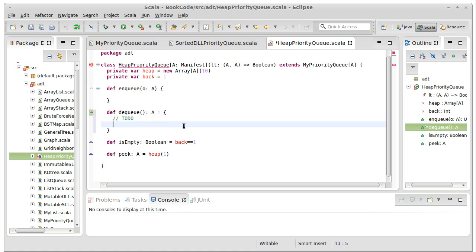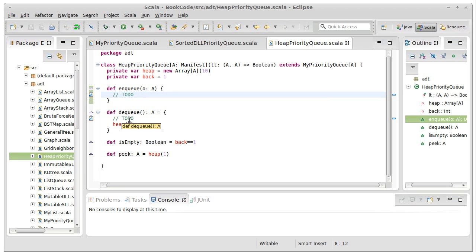And since we're not using index zero, back will start off as one. That makes some of these things easy. isEmpty is back is one, peak is return heap sub one. We'll put in a comment there so that this compiles, and we'll put in a TODO there as well. And this is where we're going to stop. So in the next video, we'll come back and we'll work on our enqueue and our dequeue where we'll actually implement the procedures that we went through graphically in our previous video.